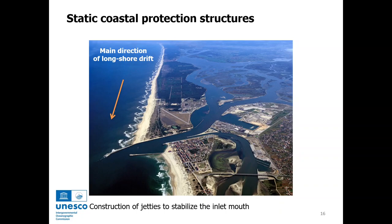In this other example, the impact of jetties is very visible. In this case, jetties were built in order to stabilize the inlet mouth, which is the main entrance of the port. It is possible to observe that the north jetty blocked sediment transport and created accretion on the north part of the coast, while the south part of the coast, due to the lack of sediments, started to suffer severe erosion.